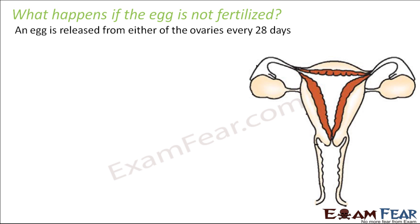An egg is released from either of the ovaries every 28 days. This is something which has to happen and is not under our control — ovulation will happen periodically every 28 days.